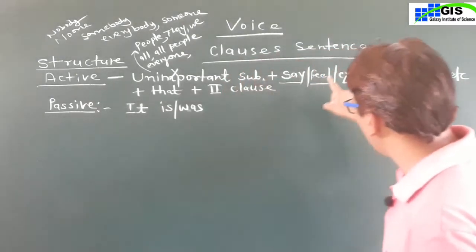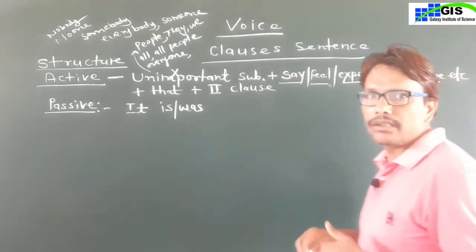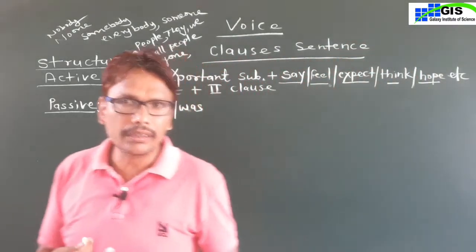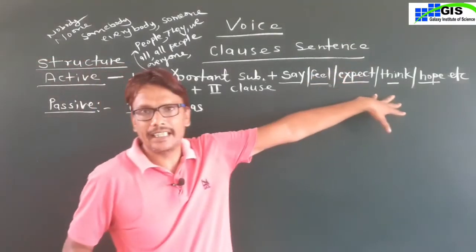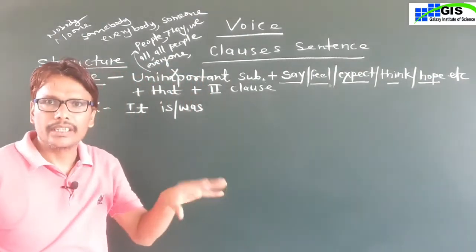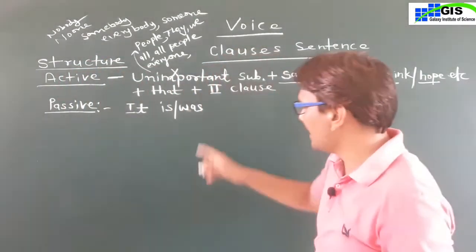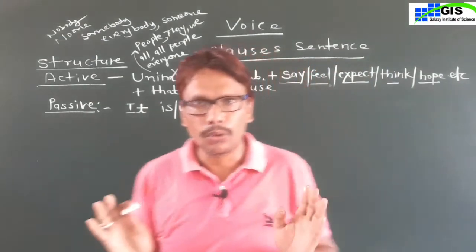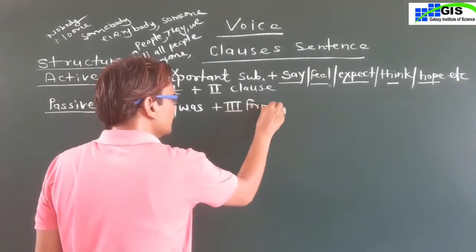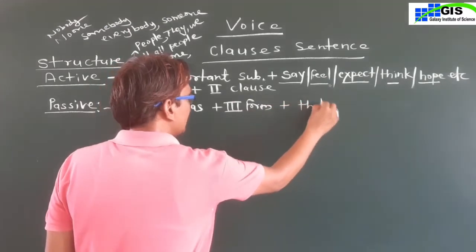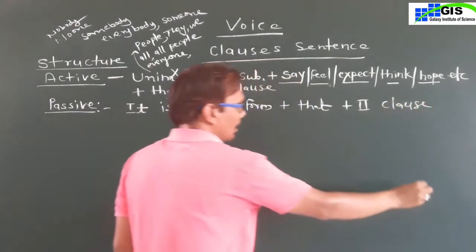But if you find the second form of the main verb — said, felt, expected, thought, hoped, believed, wished — then you will write 'was'. That means: if there is present indefinite tense, write 'is'; if you find the second form of the main verb meaning past indefinite tense, write 'was' with the subject 'it'. Then write the third form of the main verb, plus 'that', plus the second clause — write the second clause as it is.